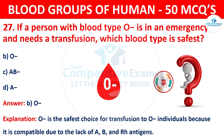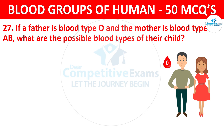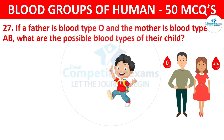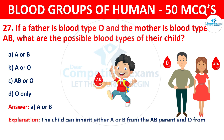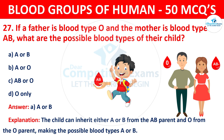Question 28: If a father is blood type O and the mother is blood type AB, what are the possible blood types of their child? The correct answer is A, A or B blood types. The child can inherit either A or B from the AB parent and O from the O parent, making the possible blood types A or B.